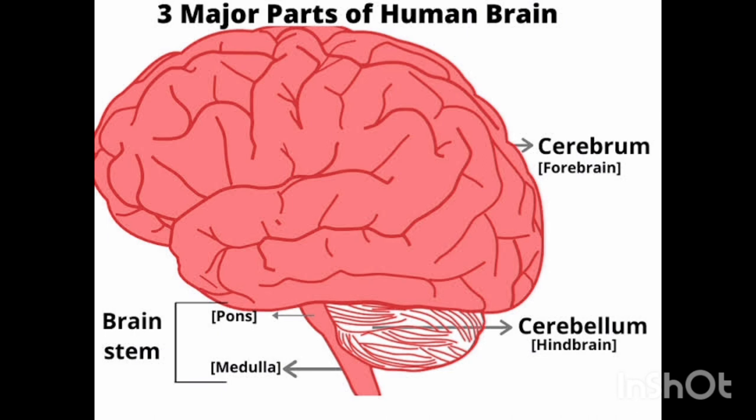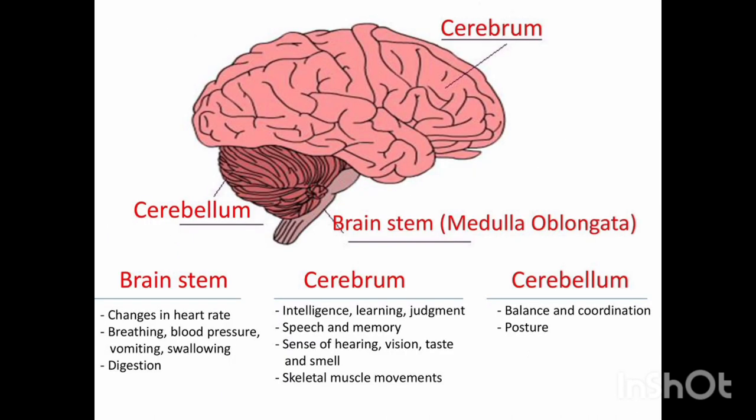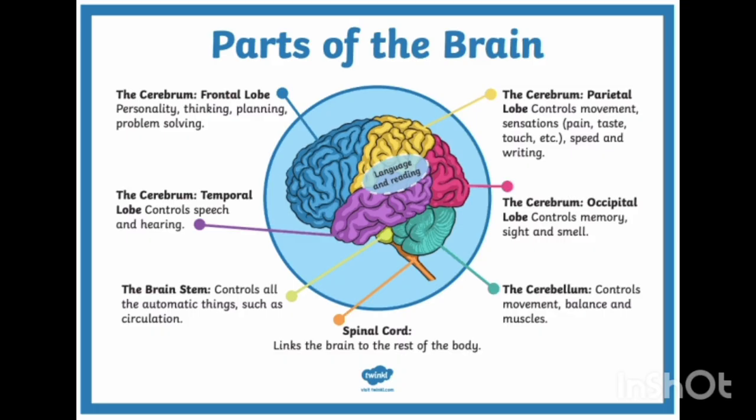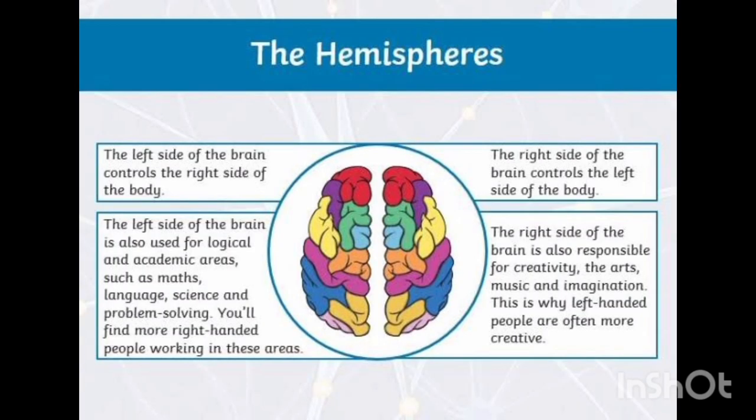You can clearly see the different parts of the brain. The cerebrum is composed of four main parts, which we discussed earlier. Here also are some important functions of the brain, and in this slide, different functions of the brain are given.